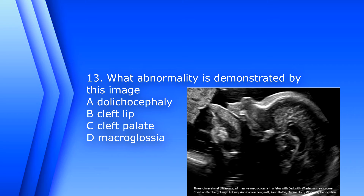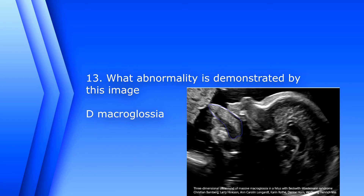Question 13. What abnormality is demonstrated by this image? A. Dolicocephaly. B. Cleft lip. C. Cleft palate. Or D. Macroglossia. The answer is D. Macroglossia. Macroglossia means enlarged tongue.